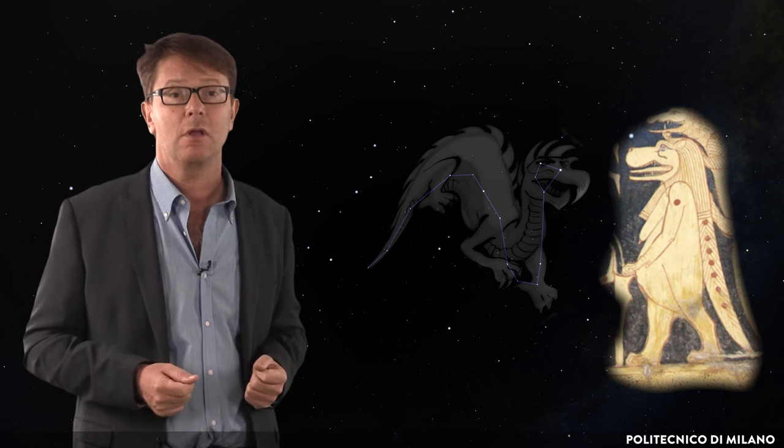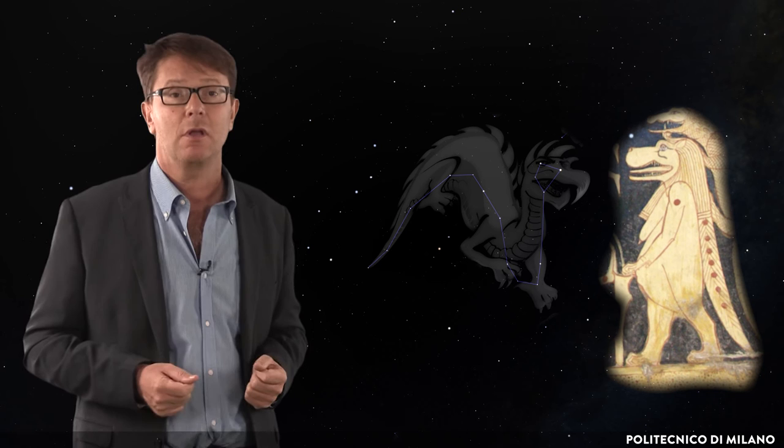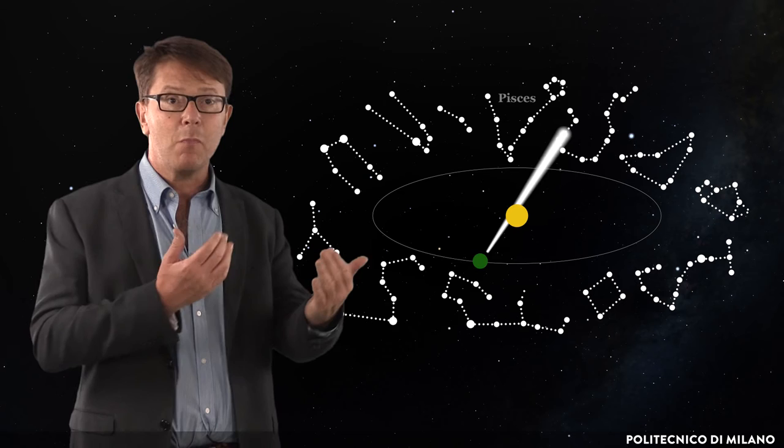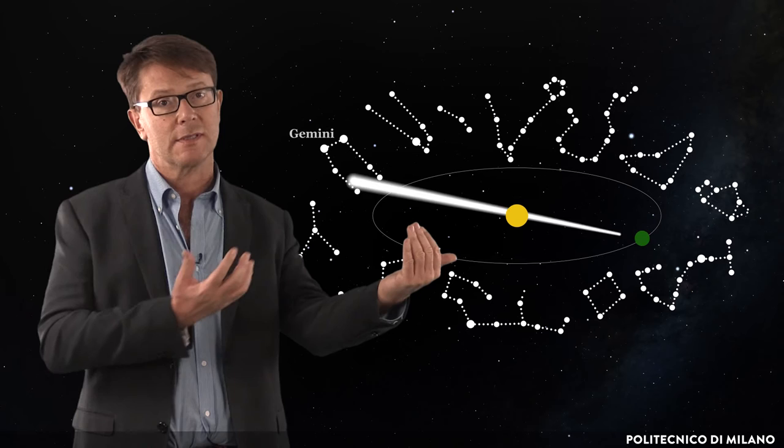A particular importance among the constellations are those located in the ecliptic, the circle described by the Sun in the sky, which can be used to monitor the motion of the Sun. This constellation form a background to the Sun as seen from the Earth, since our star shifts from one constellation to another in the course of the year.